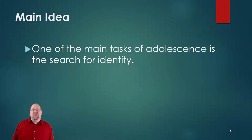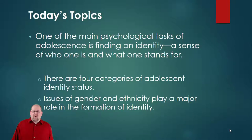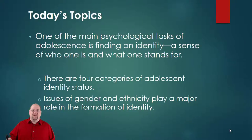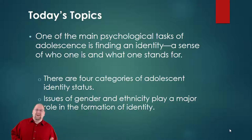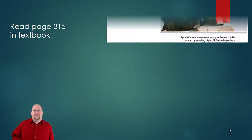For this section, our main idea is that one of the main tasks of adolescence is the search for identity — trying to figure out who we are as we go through this process. We're going to talk about these four tasks and trying to figure out a sense of who we are and what we stand for. There are four stages or categories that adolescents tend to identify with, called identity statuses. We'll also look at the issues of gender and ethnicity and how those play a role in the formation of our identity, including expectations within our gender or our ethnicity.